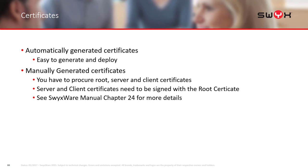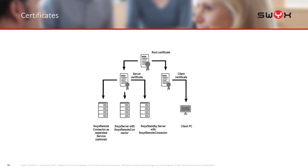We're going to cover the automatically generated certificates. The topology is: a root certificate is generated during install, that root certificate is used to generate a server-side certificate which the server issues to any service that requires it — the Remote Connector service on master and standby. It will also generate a client certificate which then has to be installed on the client PC. We're going to cover all of that in this live demonstration.